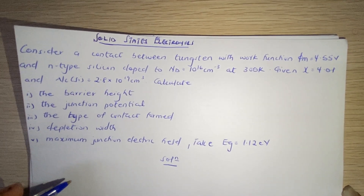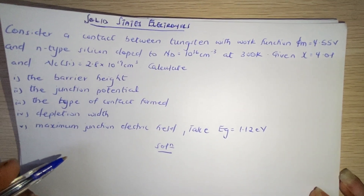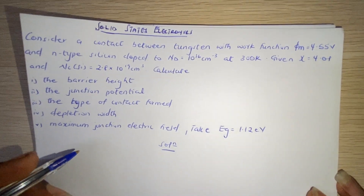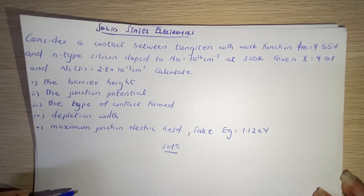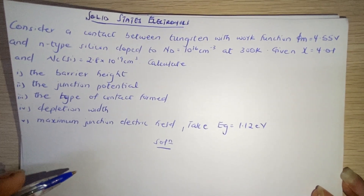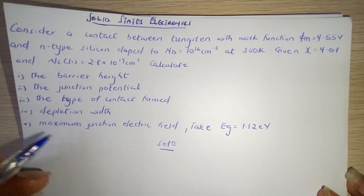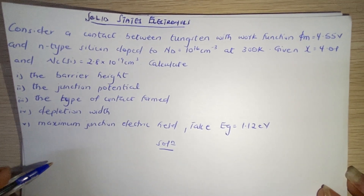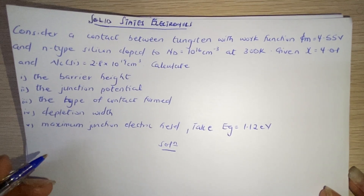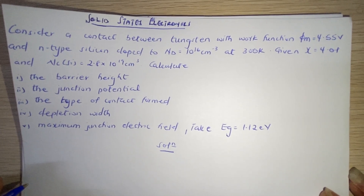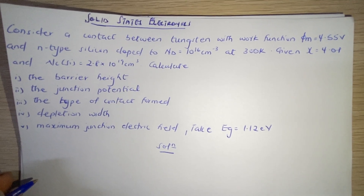The question says: consider a contact between tungsten with work function φm equal to 4.55 volts and n-type silicon doped to Nd equal to 10 exponent 16 per cm³ at 300K temperature. Given χ, which is the electron affinity, equal to 4.01, and Nc of Si, which is the effective density of states at the conduction band, equal to 2.8 times 10 exponent 19 cm³. Calculate: i) the barrier height, ii) the junction potential, iii) the type of contact formed, iv) depletion width, and v) maximum junction electric field, taking Eg, which is the energy gap, equal to 1.12 electron volts.